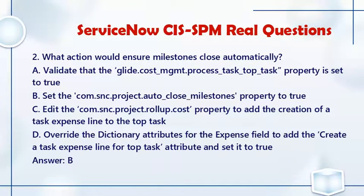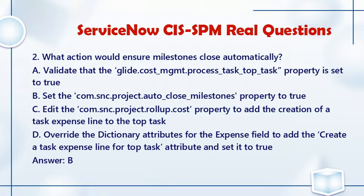Question 2: What action would ensure milestones close automatically? a. Validate that the glide.cost_management.process_task_top_task property is set to true. b. Set the com.snc.project.auto_close_milestones property to true. c. Edit the com.snc.project.rollup_cost property to add the creation of a task expense line to the top task. d. Override the dictionary attributes for the expense field to add the 'create a task expense line for top task' attribute and set it to true. Answer: B.